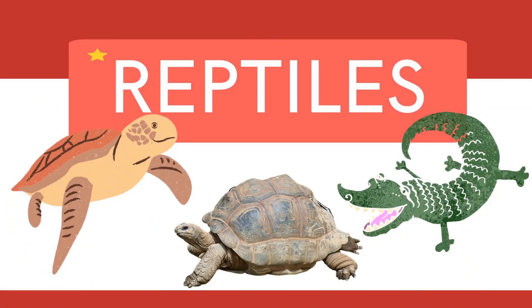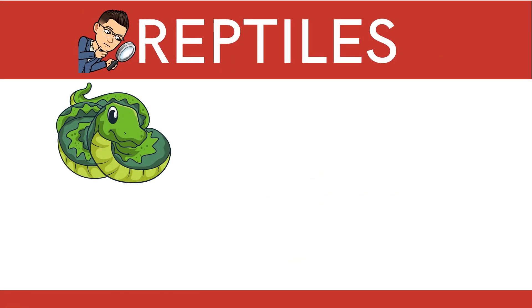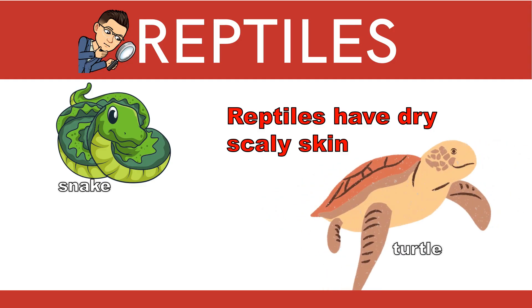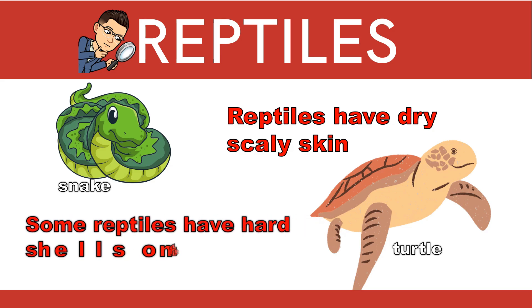Let's proceed to the next group of vertebrates, which is reptiles. What animal is this, class? It is a snake — an example of a reptile. Will you describe the body covering of a snake? It has scaly skin. Reptiles have dry, scaly skin. How about the turtle, class? Turtle is an example of a reptile. Will you describe the body covering of the turtle? Turtle has a shell. Some reptiles have hard shells on their bodies.